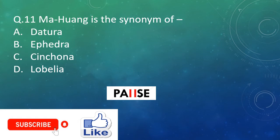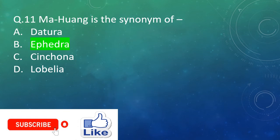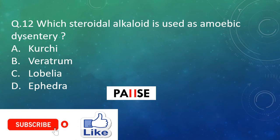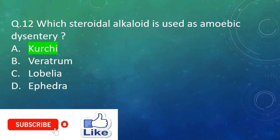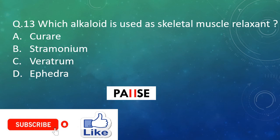Question eleven: Options include Datura, Ephedra, Cinchona, and Lobelia. The right answer is Option B: Ephedra. Question twelve: Which steroidal alkaloid is used as an amoebic dysentery treatment? Option A: Puri. Option B: Veratrum. Option C: Lobelia. Option D: Ephedra. And the right answer is Option A: Puri.